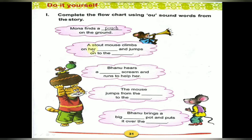Next one: A stout mouse climbs on her dash and jumps on to the dash. A stout mouse climbs on her blouse and jumps on to the couch. P-O-U-C-H pouch. B-L-O-U-S-E blouse. C-O-U-C-H couch. These all are OU sound words.